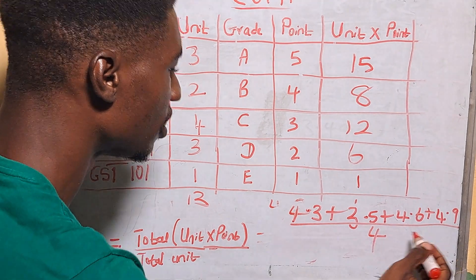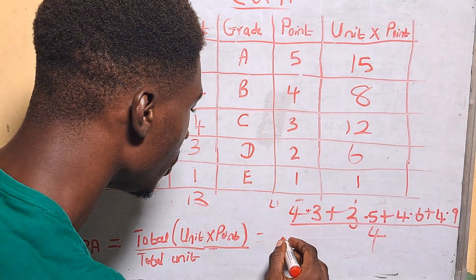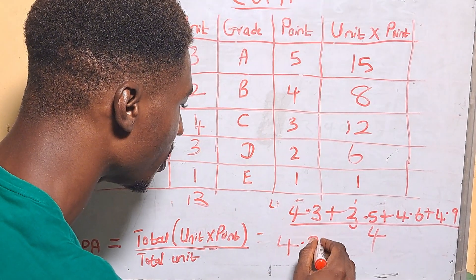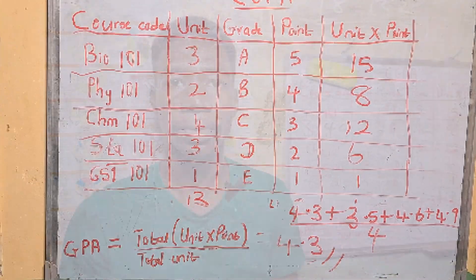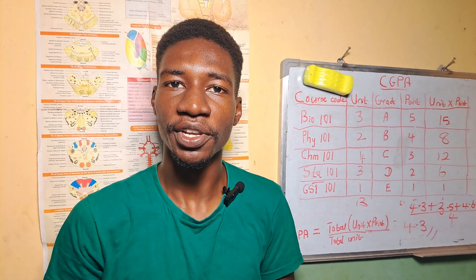So by the time we add this and divide by four we will have a total CGPA of 4.3. So this will be your final graduating CGPA. So this is an easy step to calculate your CGPA.